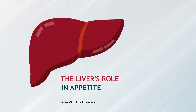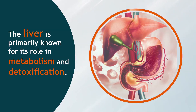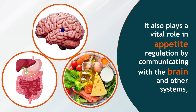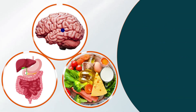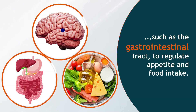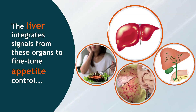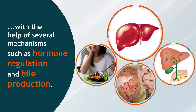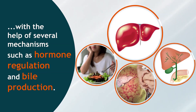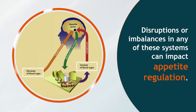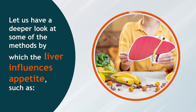The liver is primarily known for its role in metabolism and detoxification, but it also plays a vital role in appetite regulation by communicating with the brain and other systems such as the gastrointestinal tract. The liver integrates signals from these organs to fine-tune appetite control through several mechanisms such as hormone regulation and bile production. Disruptions or imbalances in any of these systems can impact appetite regulation.